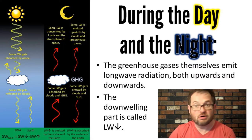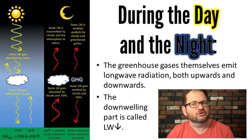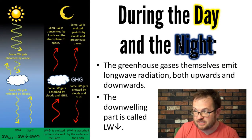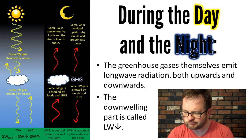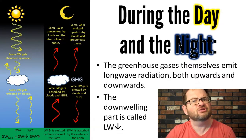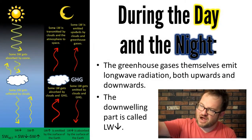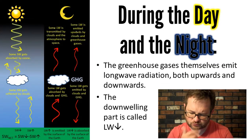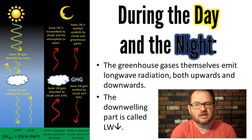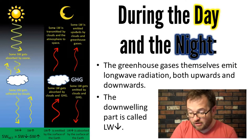The greenhouse gases themselves are made of matter — they're molecules — and part of what it means to be matter is you emit longwave radiation. The greenhouse gases are at terrestrial temperatures, so by Wien's law they emit radiation at long wavelengths. Some of that radiation is emitted upward and makes it out to space, but a lot of it is emitted downward and comes back down to the surface of the Earth. We can actually measure it — we call this LW down, longwave down.